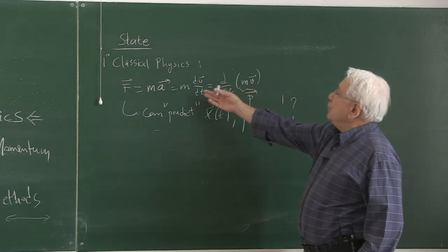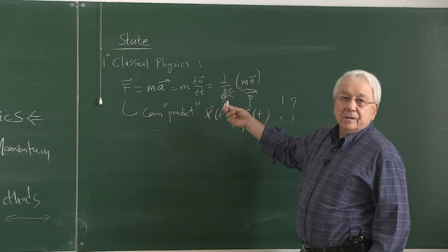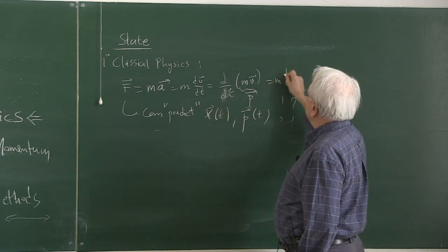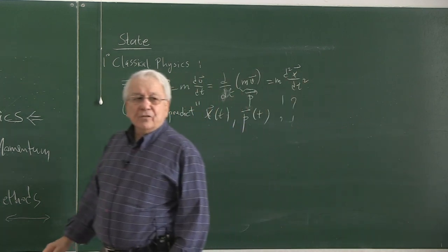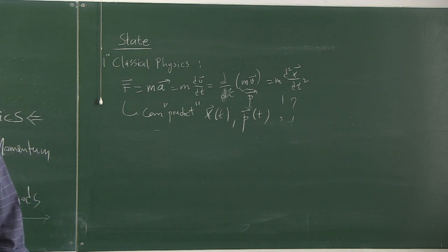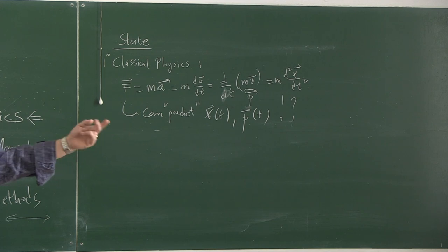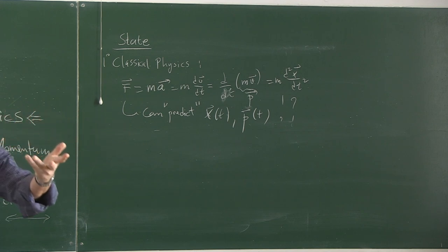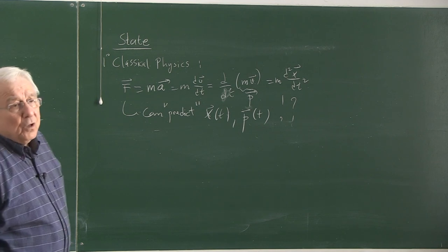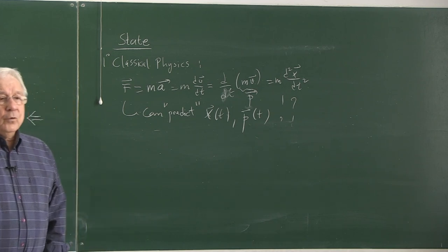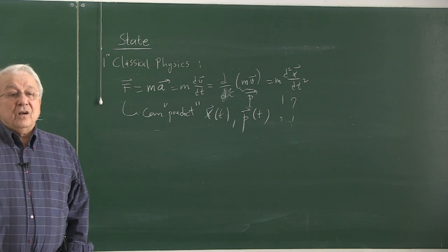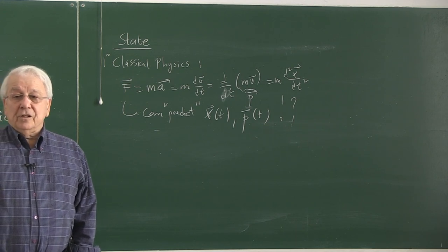This is a second order differential equation. Another equivalent way of writing it is a second degree differential equation in time for each component or each degree of freedom. This is a simple single particle represented by a Cartesian coordinate with three components, but it can be a system with as many degrees of freedom as possible. For each degree of freedom, there is such an equation.